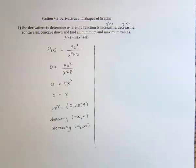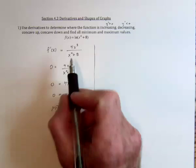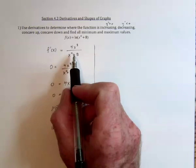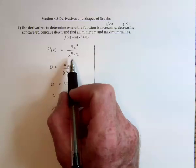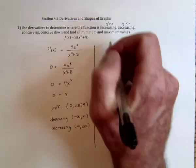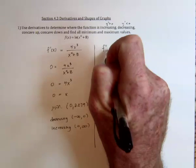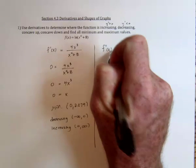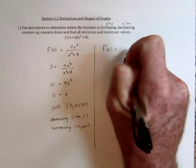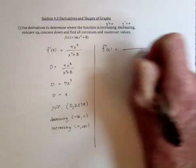Next, where is it concave up and concave down? For that we need the second derivative. This is going to be a little more challenging because we need to use the quotient rule — and by challenging, I mean fun.